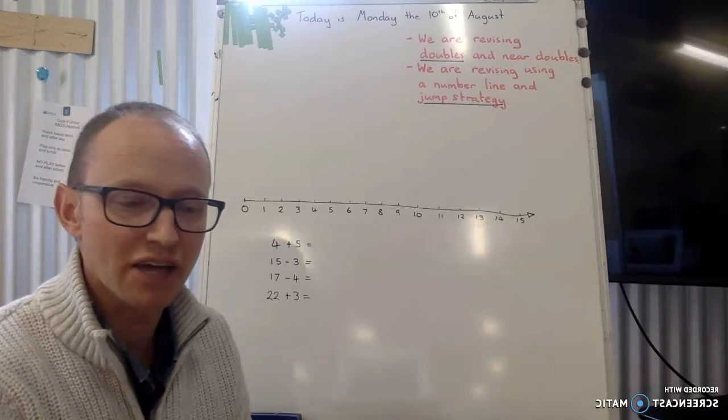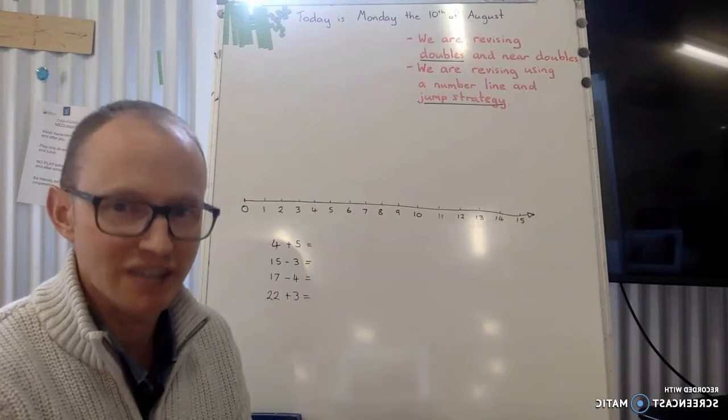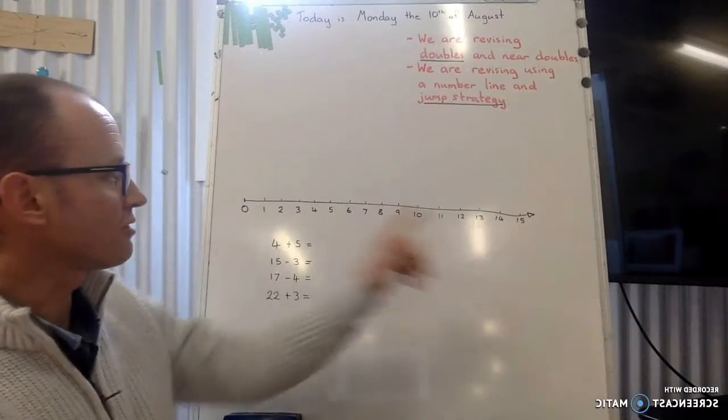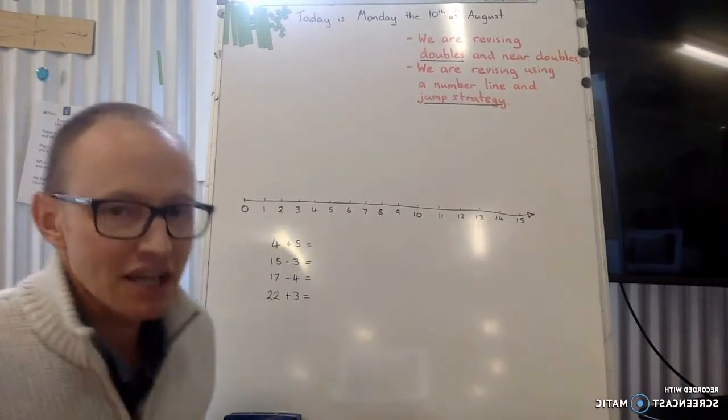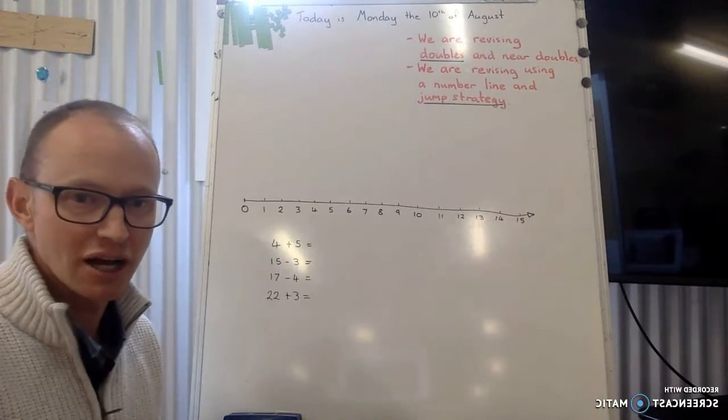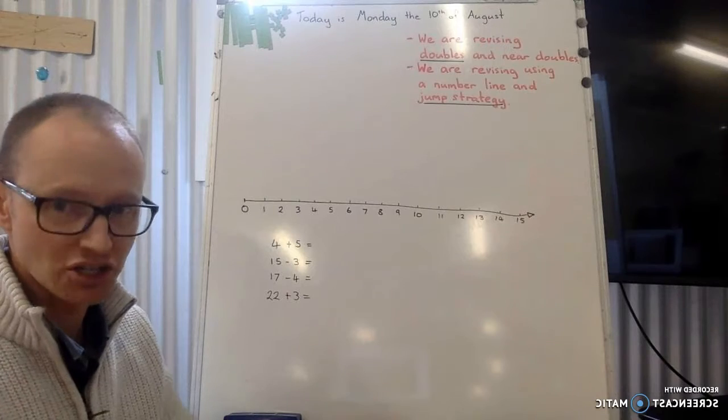Well, welcome back. So hopefully you did those doubles and near doubles very quickly. We're now going to be revising a number line. So drawing one on the board here, going from 0 to 15, but actually got the arrow there that it does keep on continuing on. And first sort of question here, and again, this is revision. So I know you probably already got the answers in your head, but I want you to make sure you're using the strategy correctly.